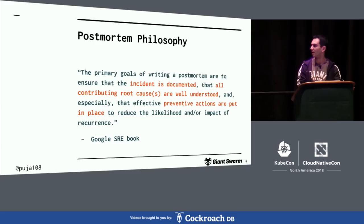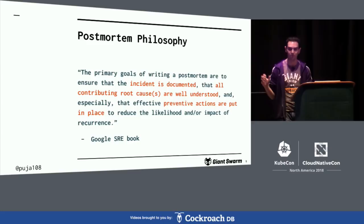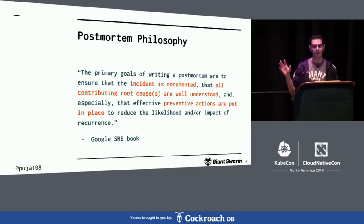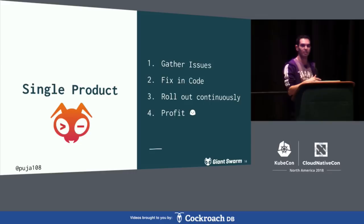That's where post-mortems come in. Failures happen, and they happen a lot. The post-mortem philosophy — Google puts it pretty well — the goal is to document incidents, find all the root causes that contributed to the incident, and then fix it or at least avoid it spreading too far. At Giant Swarm, we gather issues, fix them in code, and roll it out to production.